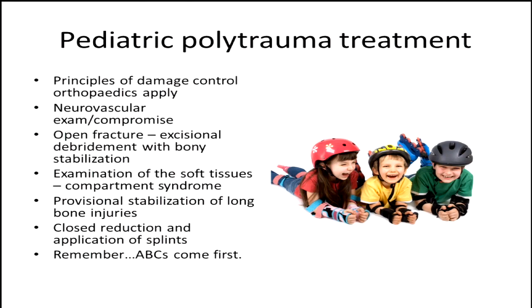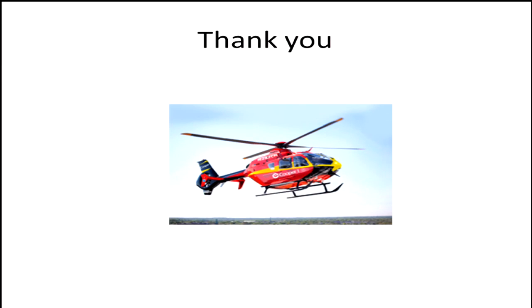In general, the principles of damage control orthopedics apply — it's the initial stabilization of these kids that's important; you don't have to fix everything all at once. Neurovascular exam and monitoring for compromise is important to avoid complications. For open fractures: excisional debridement, bony stabilization, and examination of soft tissues. In most kids, closed reduction and casting is the gold standard for treating most injuries. For residents: if you have no idea, just pick the closed reduction option — usually you'll be safe. The ABCs come first.